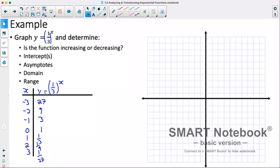So plotting this graph, obviously, at 27 is not going to fit. So we'll start at negative 2 comma 9. At negative 1, we're at 3. 0, we're at 1. 1, we're at 1 third, then we're at 1 ninth, then 1 over 27. So we can see that we have a decreasing graph, which we should expect because 1 third is between 0 and 1.